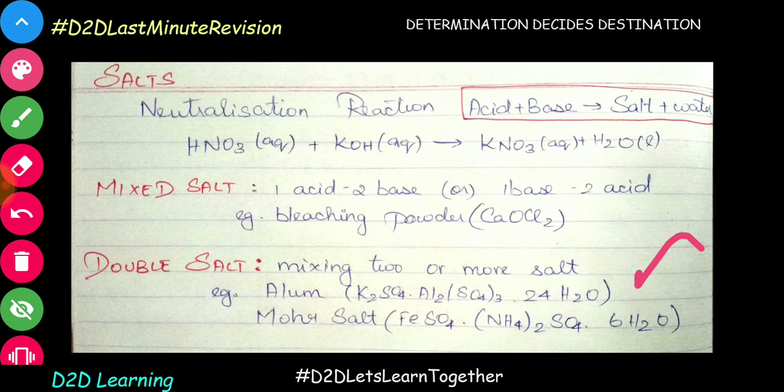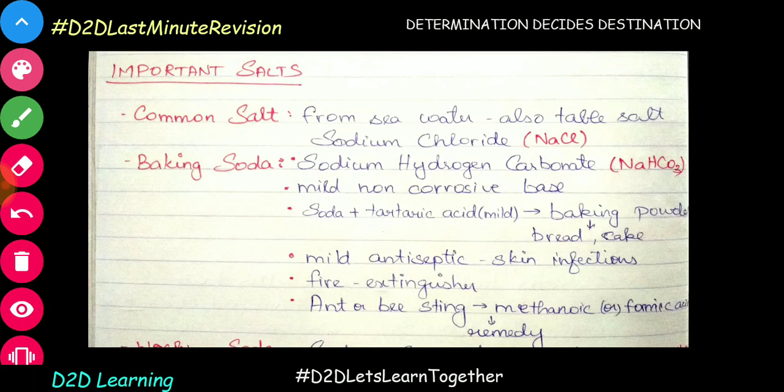Another double salt: FeSO4 · (NH4)2SO4 · 6H2O — that is Mohr's salt. Even in the exam, if you can check it out, it will help you in the elimination method. Now let's go to the important salts. First, we have common salt.